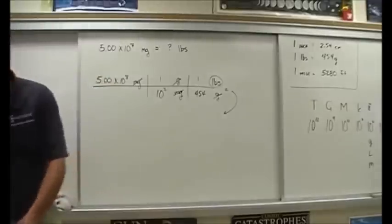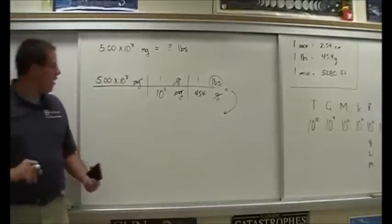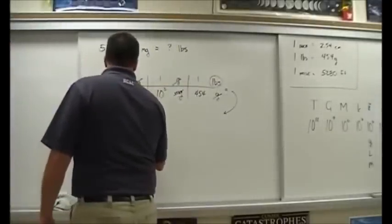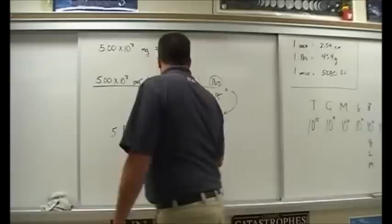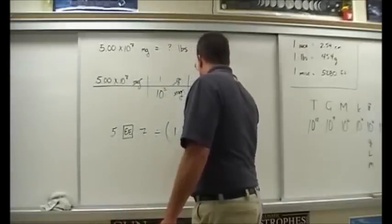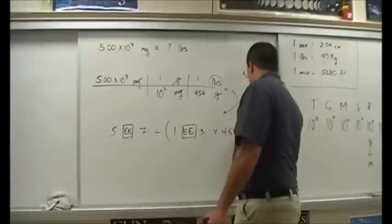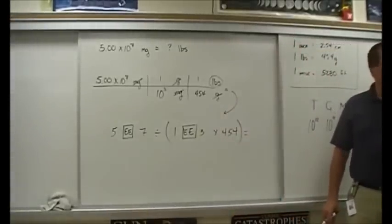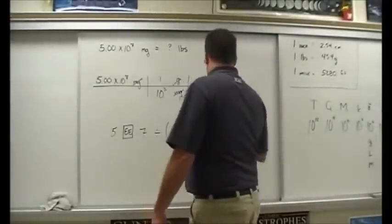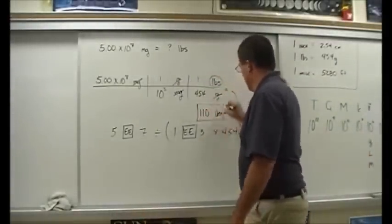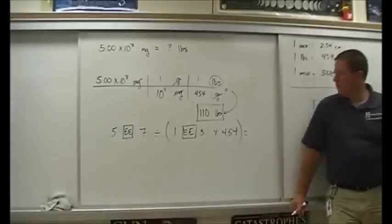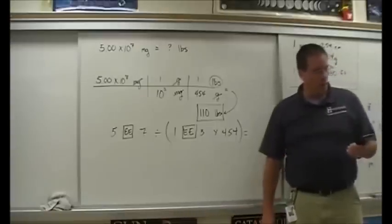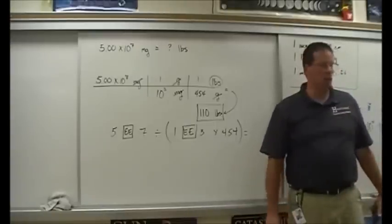Let's do some calculating. Some of you may even weigh 5.00 times 10 to the 7 milligrams. To enter it: 5 EE 7, divided by, open parentheses, 1 EE 3, times 454, close parentheses. My calculator says 110.1321586 — don't write all that down. Round to 110.